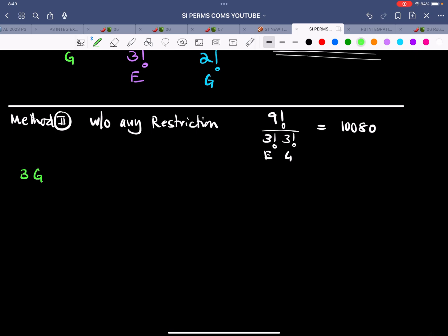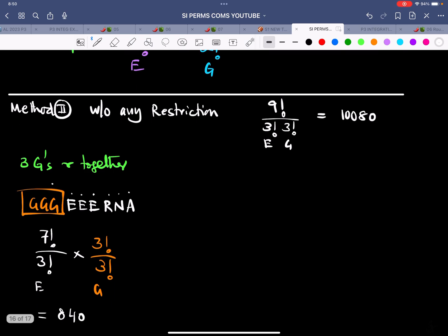Another condition: What if 3 G's are together? That is also a possibility. Let me draw a box and write 3 G's inside. What is left? I am left with 3 E's, R, N, and A. One, two, three, four, five, six, seven. That is 7 factorial divided by 3 factorial for the E's. What is happening inside the orange box? Three alphabets, 3 factorial divided by 3 factorial for the G's. When we do this calculation, this answer comes out to be 840.